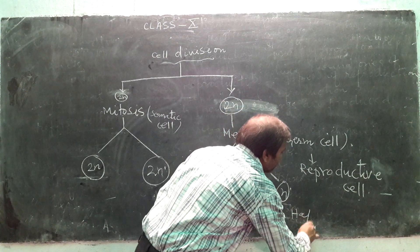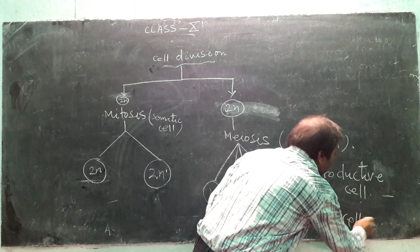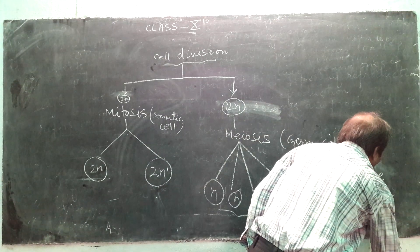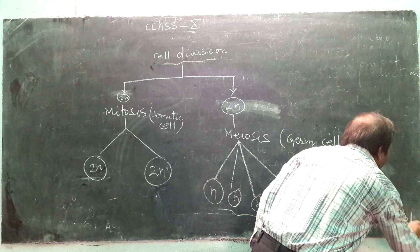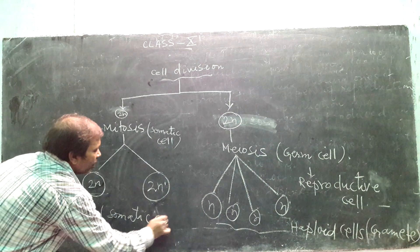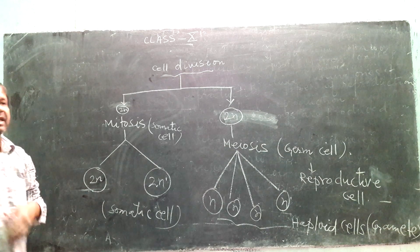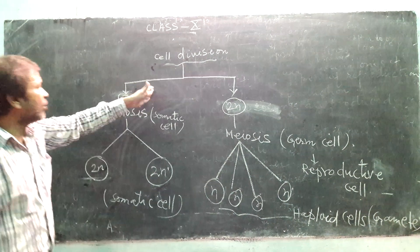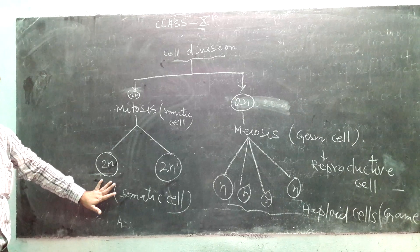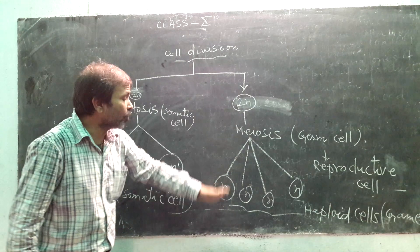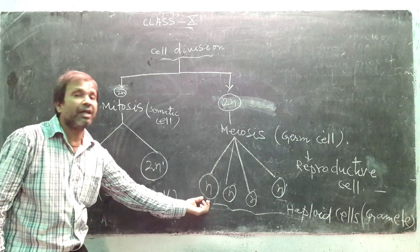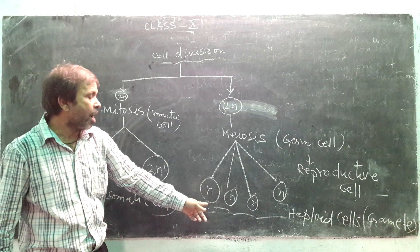These four new cells are the gametes. In sexual reproduction, gametes are haploid cells. In mitosis, the number of chromosomes in the somatic cell remains the same. But in meiosis, the number of chromosomes is reduced to half. So when two gametes from two parents fuse during fertilization, the resulting offspring will have the full chromosome number — the same as the parents.